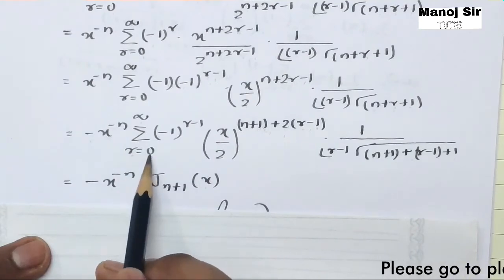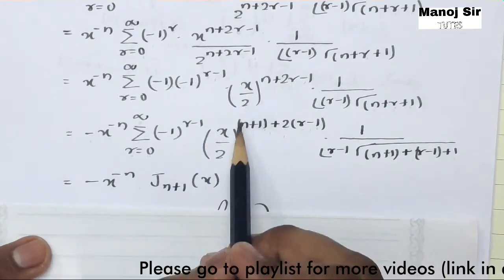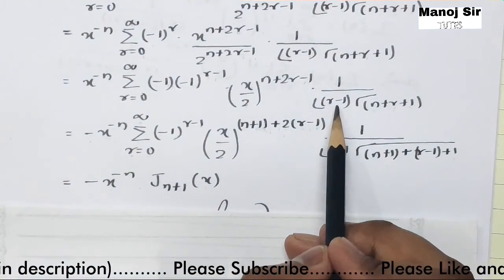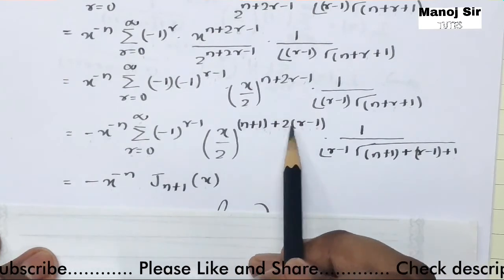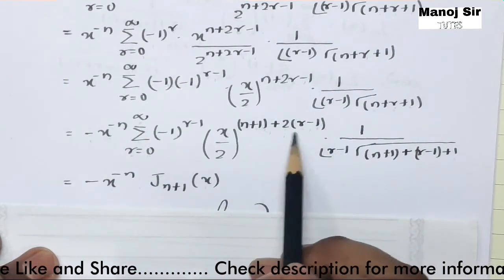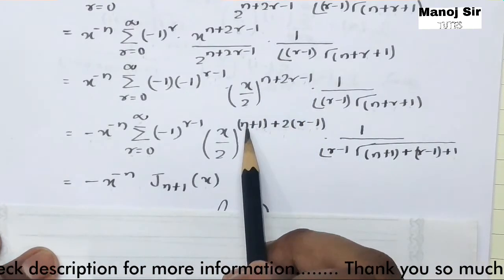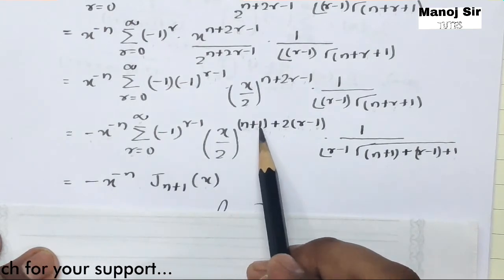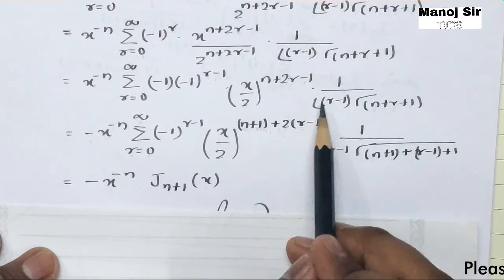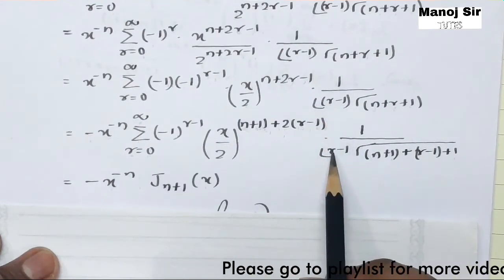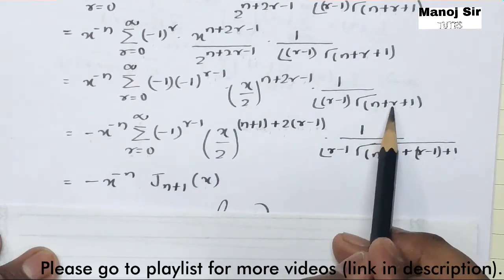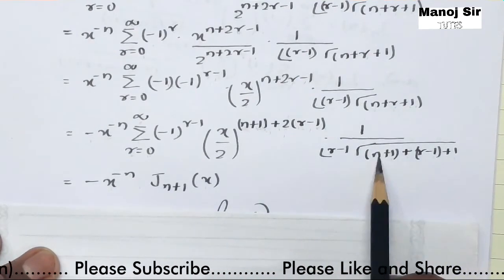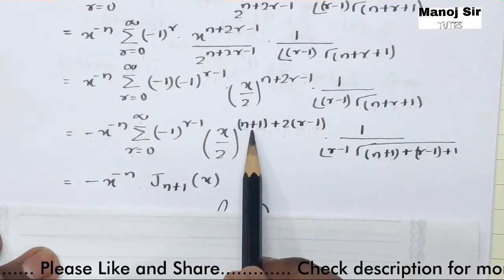Taking (-1) outside the summation, and replacing n with n+1 throughout: the power becomes (n+1)+2(r-1), the denominator has (r-1)! and Gamma(n+1+(r-1)+1) = Gamma(n+r+1). The summation now matches the series definition of J_{n+1}(x) with index shifted to r-1.